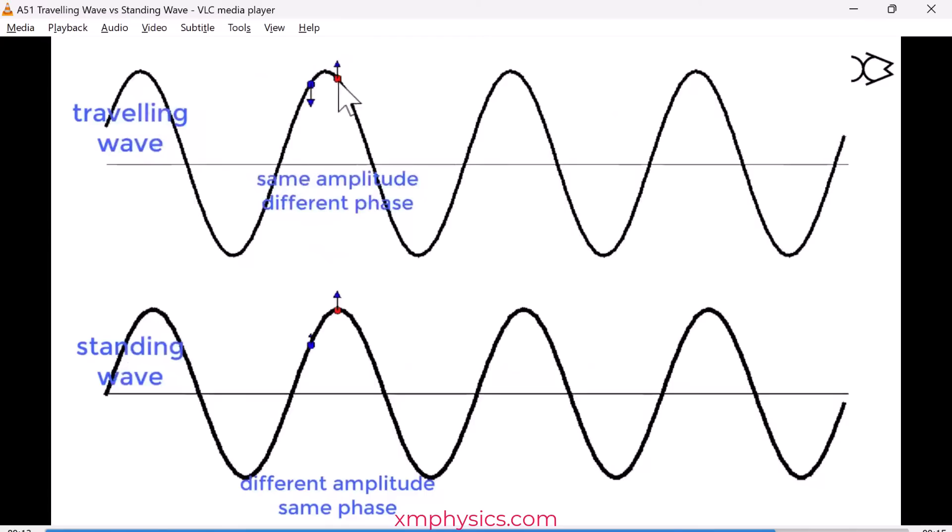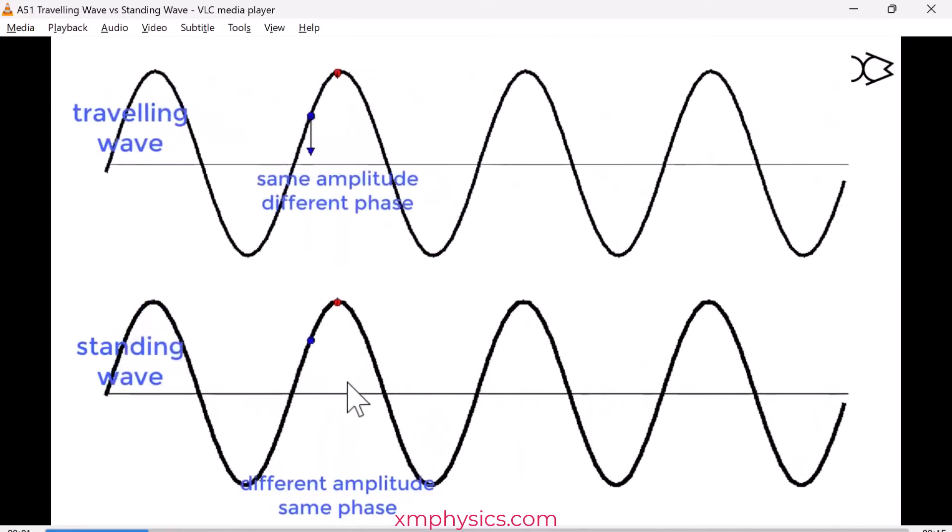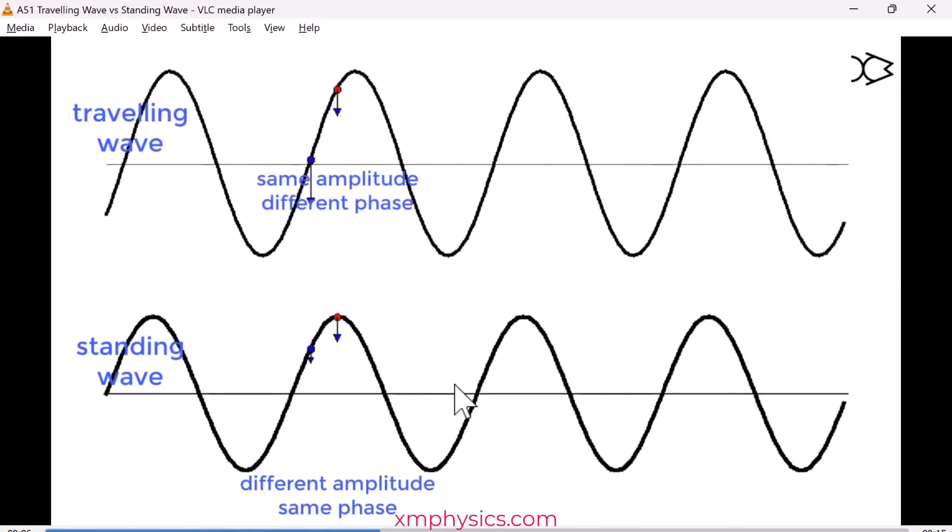And in fact, for any two points, the phase relationship can be calculated using delta x divided by lambda times 2 pi radian. What about the standing wave? The standing wave is actually much easier. There's nothing to calculate. You are either completely in phase or completely out of phase.